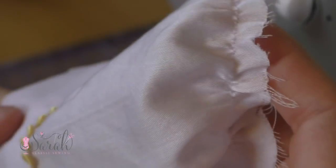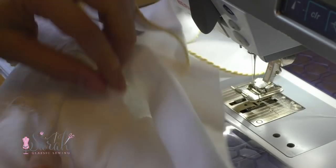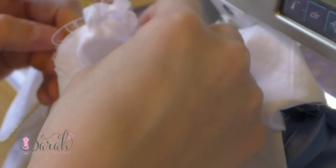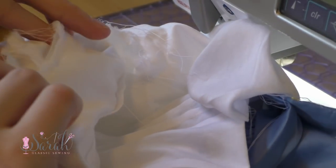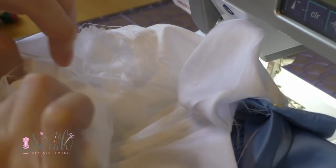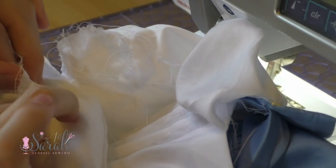I'm easing my sleeve, but if you're new, gathering would work just fine too. Then I insert my sleeve through that armhole so I have the right side of the sleeve together with the right side of the shirt. And I make sure to line up the French seam of the sleeve with the side seam of the shirt.